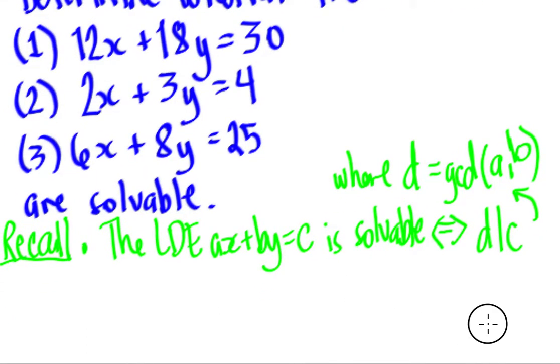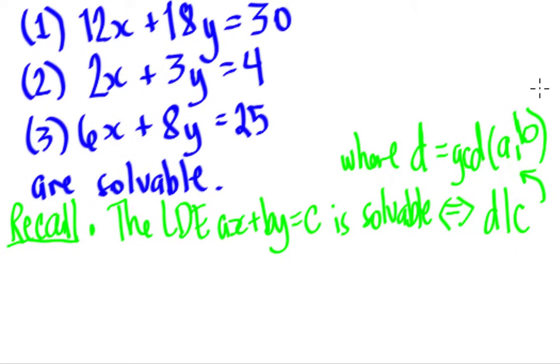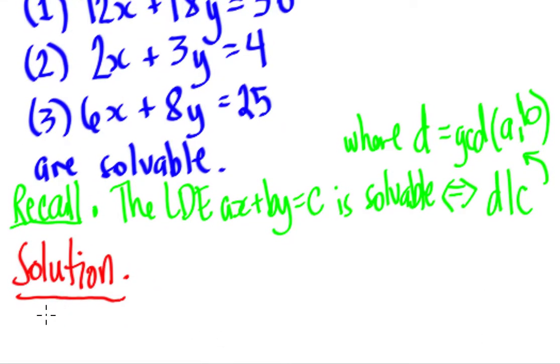For number 1, we have 12x plus 18y equals 30. First, I think we need to find the GCD of a and b. So in this example, solution, let's write it down. For number 1, let's try to write again the equation, the LDE: 12x plus 18y equals 30. Now, we first need to get the GCD of a and b.